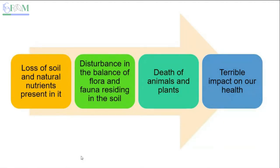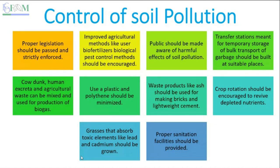To summarize the effects: soil pollution leads to loss of natural nutrients and soil becoming barren. It disturbs the balance between flora and fauna — the soil biodiversity — affecting microorganisms, larger animals, and plants. It can lead to the death of animals and plants, and humans are also included. Overall, it leads to terrible health impacts — whether through chemical changes, physical changes, or biological changes in the soil.